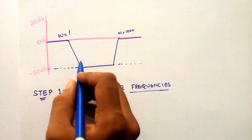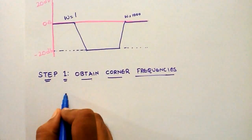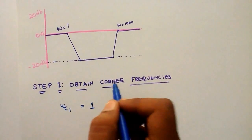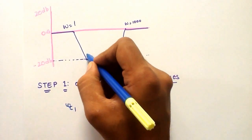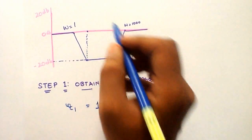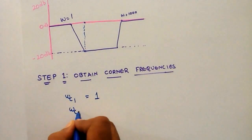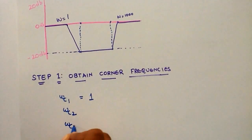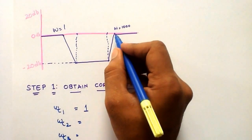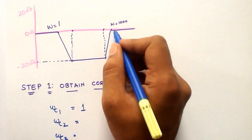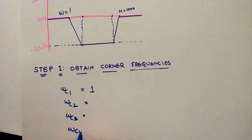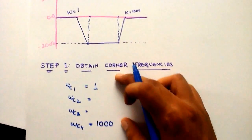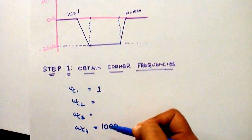Omega C1 is equal to 1, which is my first corner frequency. My second corner frequency is omega C2, and this is my third corner frequency, omega C3. Corner frequency 4, omega C4, is omega equal to 1000, which is already given. So we need to find out omega C2 and omega C3.